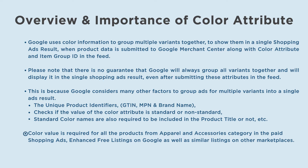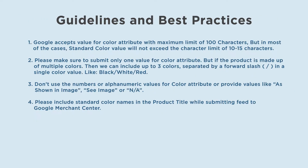Color value is required for all the products from the apparel and accessories category in the paid shopping ads, enhanced free listings on Google, as well as similar listings on other marketplaces. Google accepts a value for the color attribute with a maximum limit of 100 characters, but in most cases standard color values will not exceed 10 to 15 characters. Please make sure to submit only one value for the color attribute, but if the product is made up of multiple colors, then we can include up to three colors separated by a forward slash.